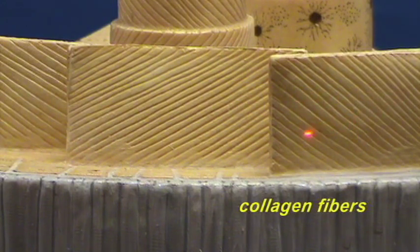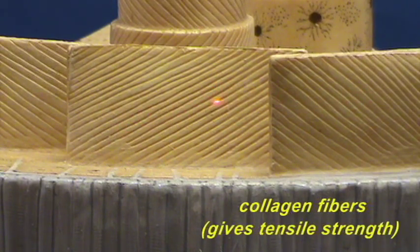And these collagen fibers are going to give bone tensile strength. So they're going to reduce the brittleness of bone and make them somewhat tougher so they can resist twisting forces without snapping. Notice that these collagen fibers in each layer are oriented at different angles. And this has the advantage of giving the bone strength, this tensile strength, in different directions.